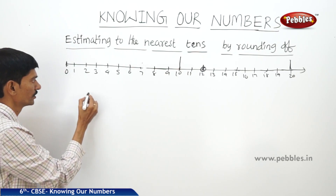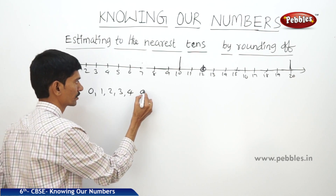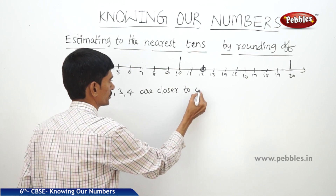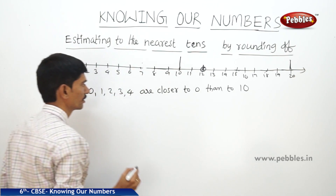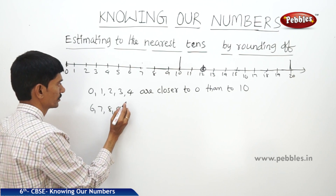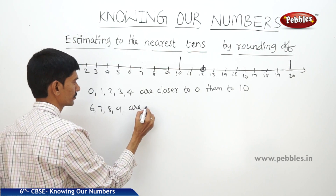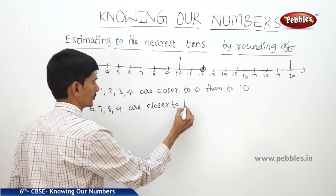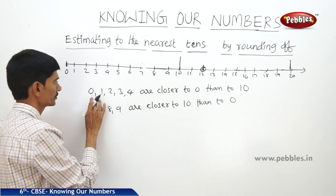We can approximate 12 to 10 rather than to 20 because it is closer to 10 than to 20. So the numbers 1, 2, 3, 4 are closer to 0 than to 10. And the numbers 6, 7, 8, 9 are closer to 10 than to 0.